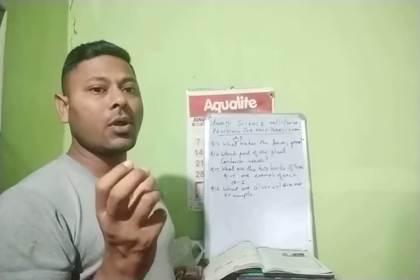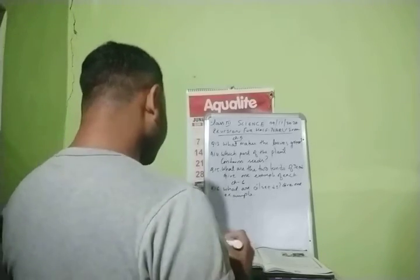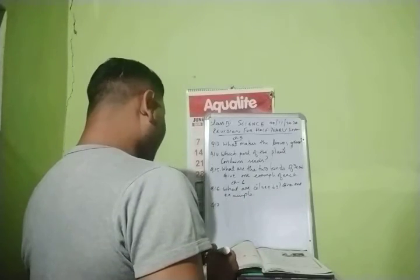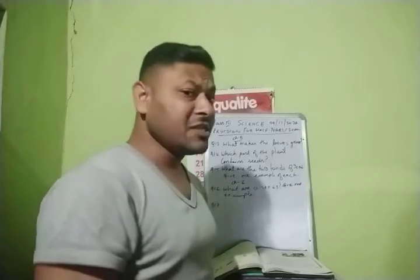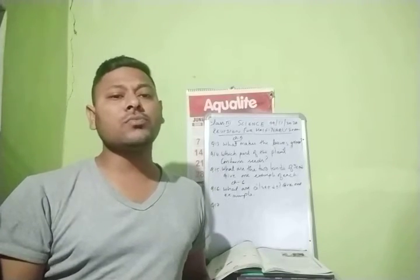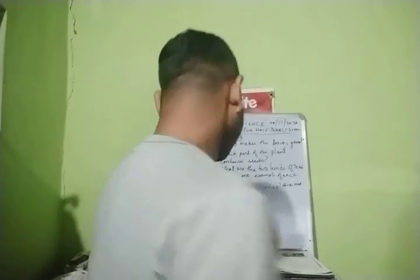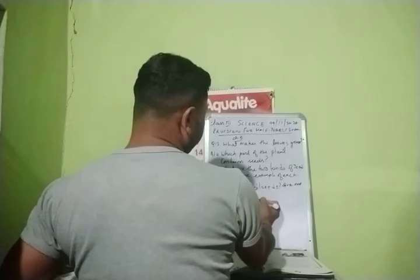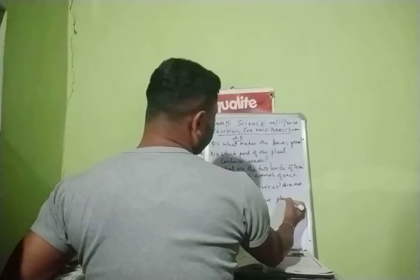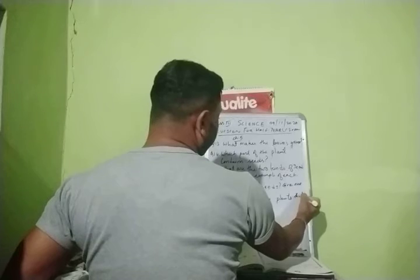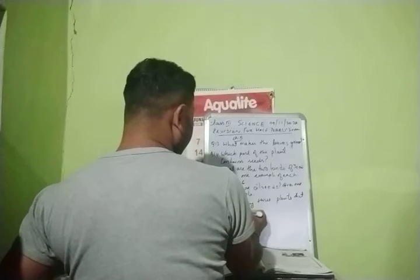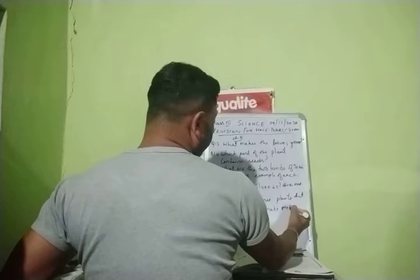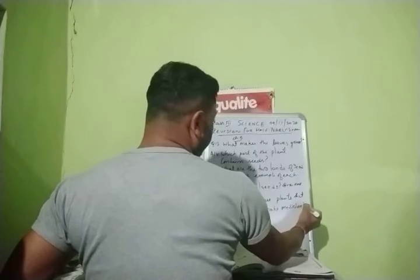Question number 17, the last question: Name any three plants that are used to make medicines.